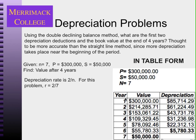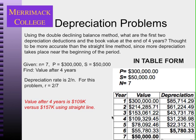We can put this in table form. The value at the beginning of year 1 is $300,000; depreciation is 2/7 times that, or $85,714. The value at the beginning of year 2 is $214,000, and multiplying by 2/7 gives the depreciation for year 2, and so on. After four years the value using the declining balance method is $109,000, whereas using the straight line method it was $157,000. The declining balance method is more severe toward the beginning and then levels out toward the end.